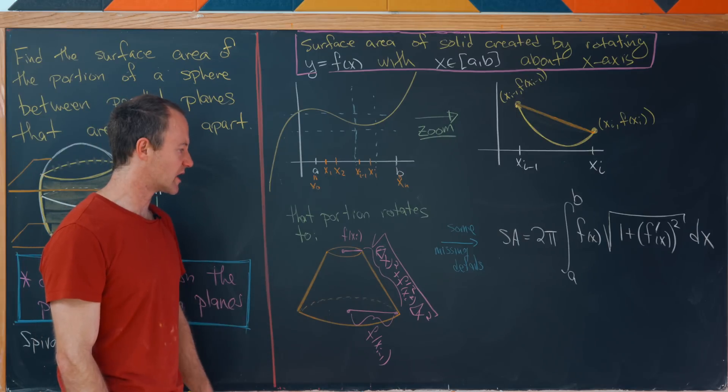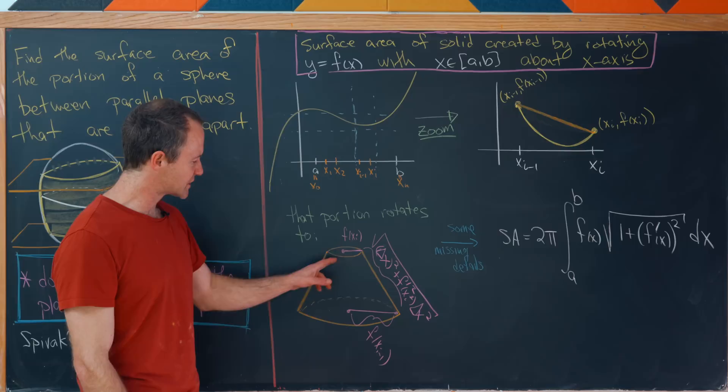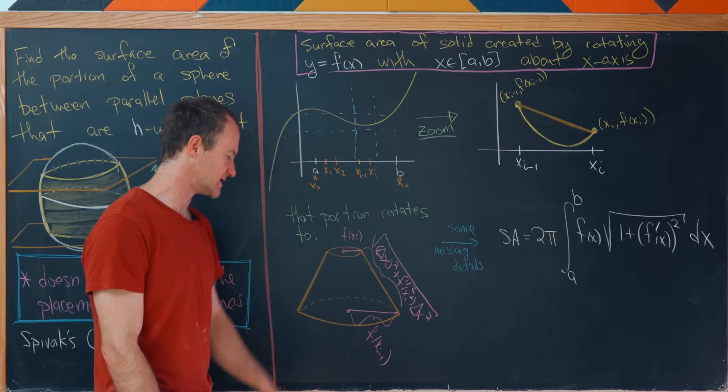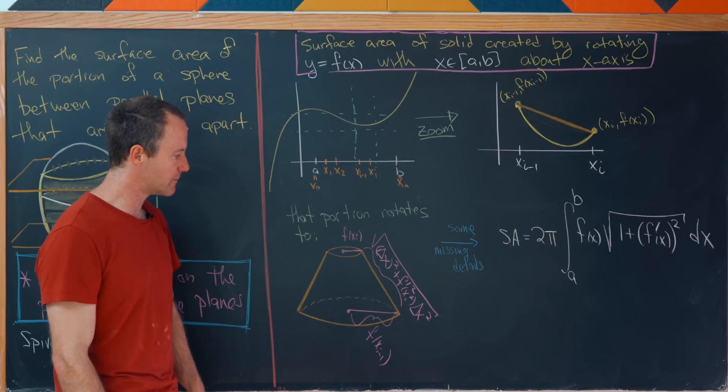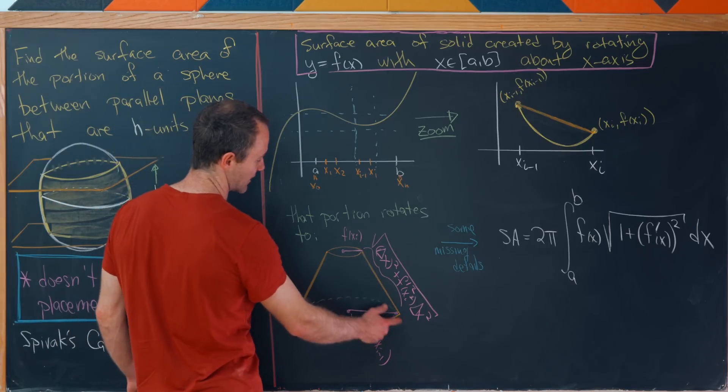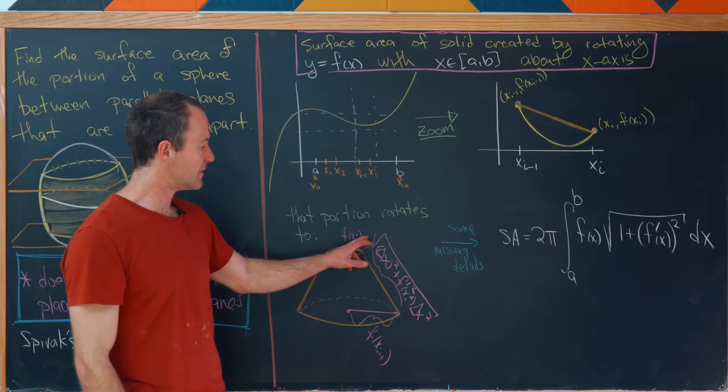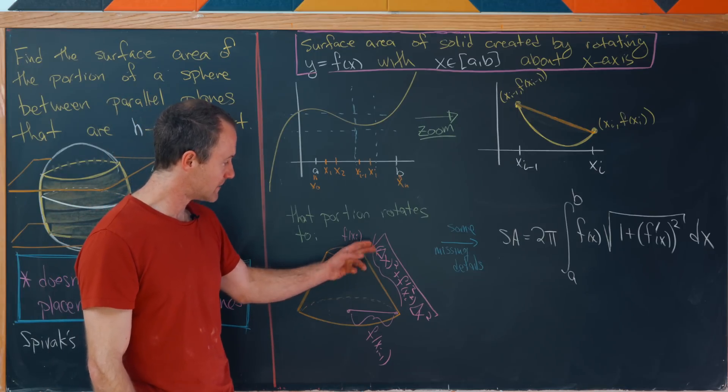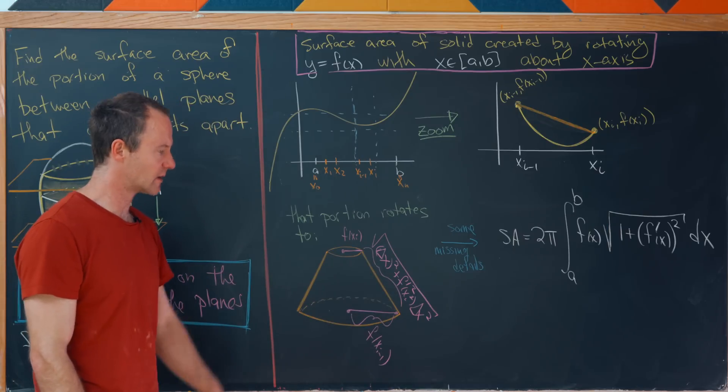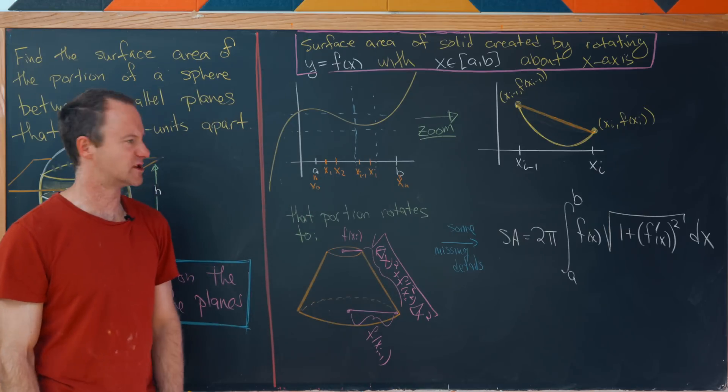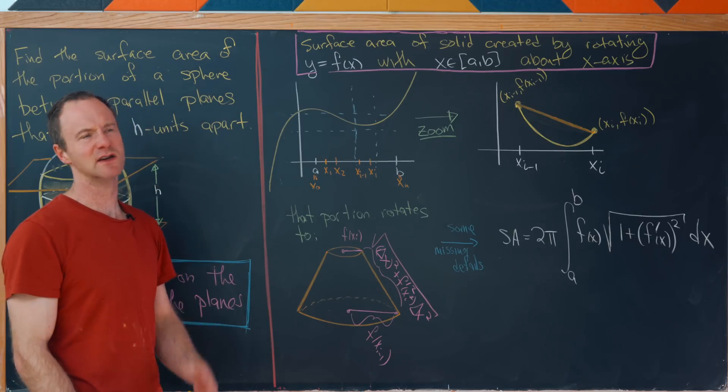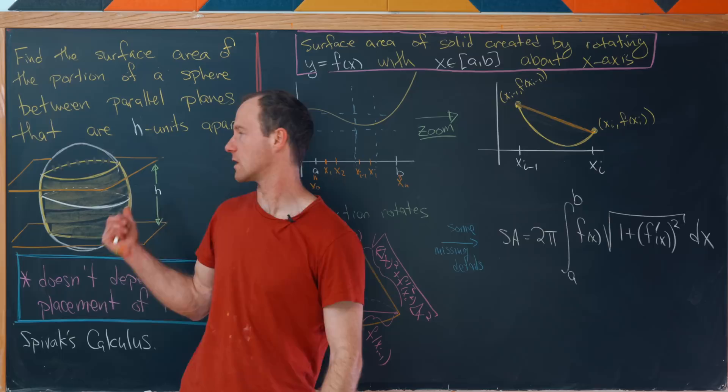And notice this cone with the top cut off has some important measurements. First of all, this radius up here is F of X sub I. This radius down here is F of XI minus 1. And then using the mean value theorem, we can actually find the hypotenuse portion of this cone to be the square root of delta X squared plus this derivative squared times delta X squared, where delta X is the distance between these two pieces of the subinterval. So I'm leaving lots of details out here, but that's because we want to keep this maybe focused on our main problem.